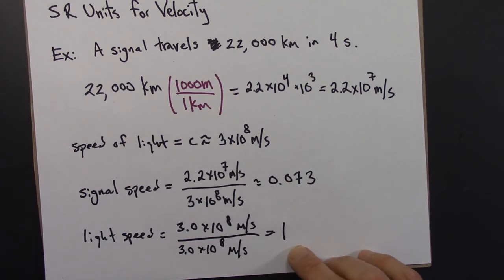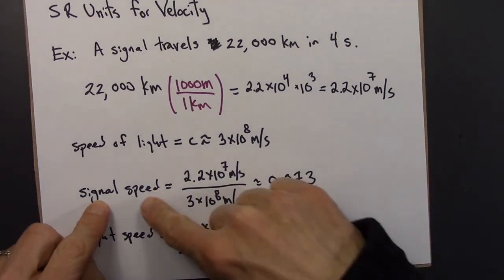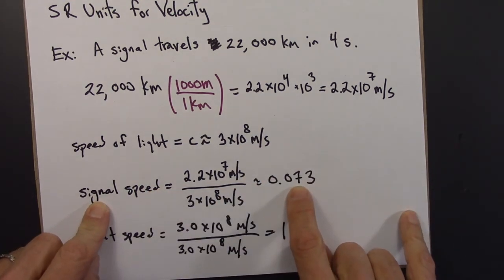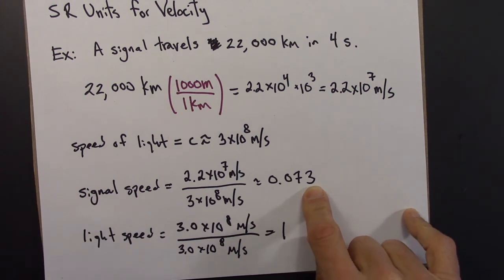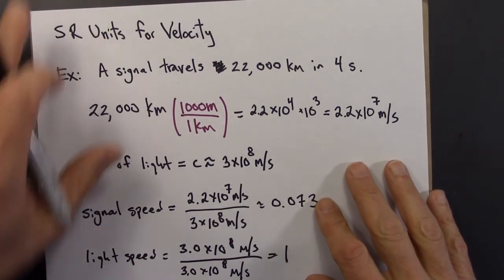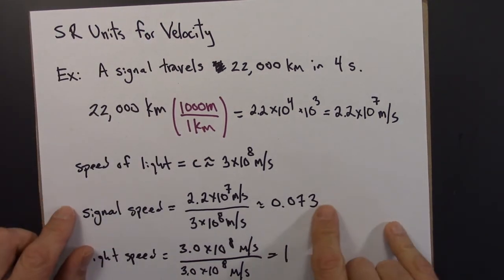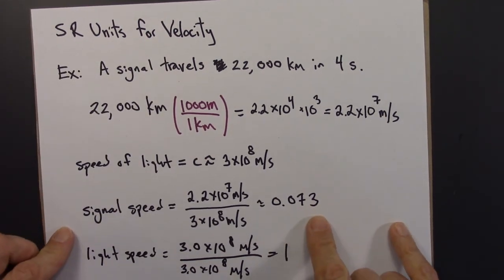Again, no units. So light travels 1 light second every time second, or 1 second per second. This other signal travels only 0.073 light seconds every second. So this is often how we'll measure velocity in special relativity. We'll measure velocities as a fraction of the speed of light.